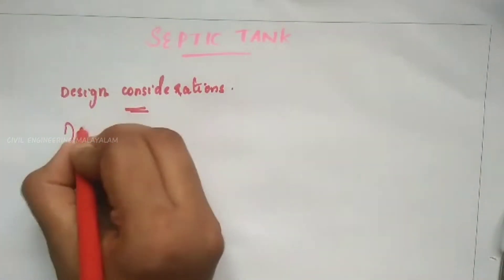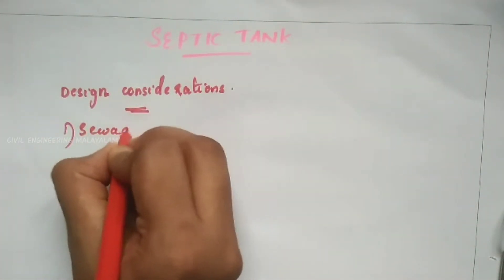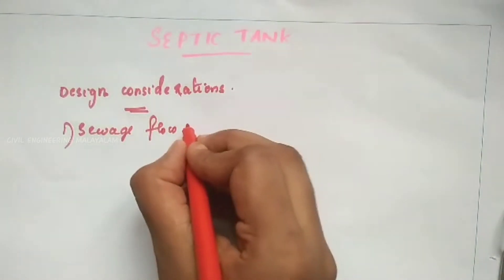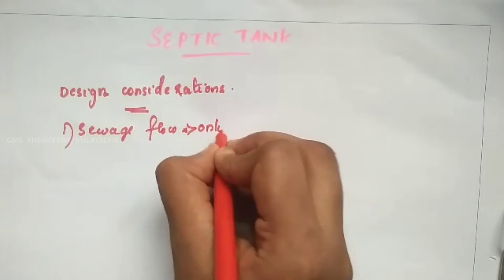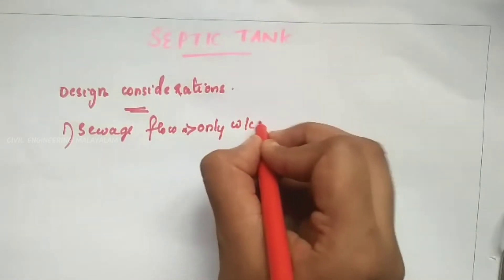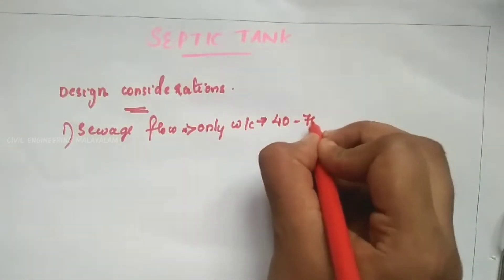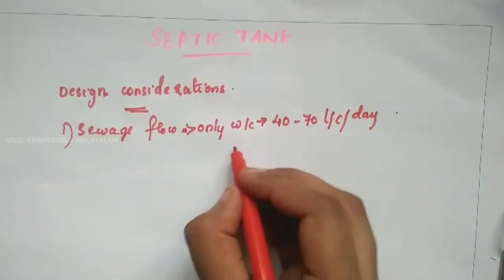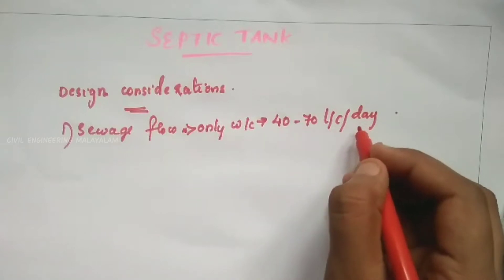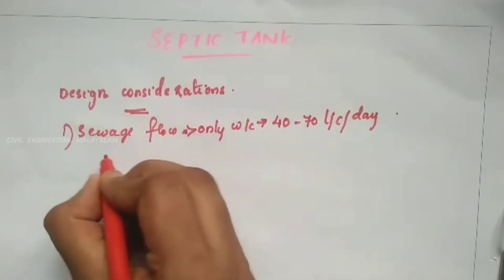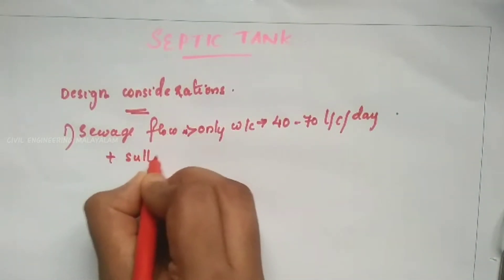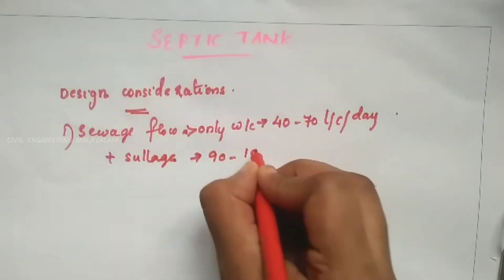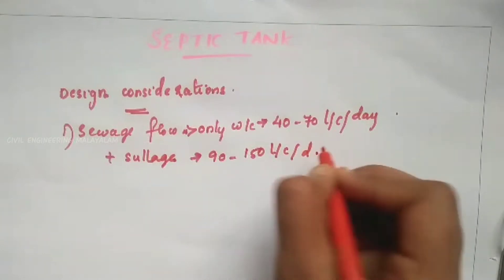The first design consideration is the sewage flow. We need to design for water closets. The sewage flow rate is 90 to 150 liters per capita per day.